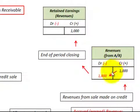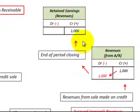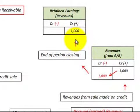What I want to note here is that the revenues account is closed at the end of the period — the end of the year. By doing so, we would debit revenues, which decreases revenues by $1,000, and then the net effect would be to credit retained earnings, increasing retained earnings by $1,000. This is a closing entry from the income statement to the balance sheet retained earnings account.